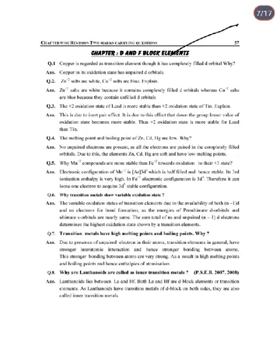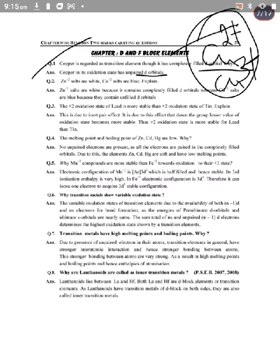Next chapter: D and F Block Elements. Question: Copper is regarded as a transition element even though it has a completely filled d orbital. This is because copper uses its d electrons in bonding and shows variable oxidation states, and that's why it is called a transition element.